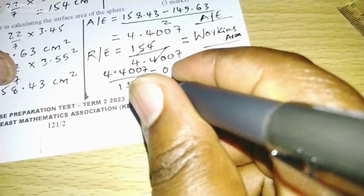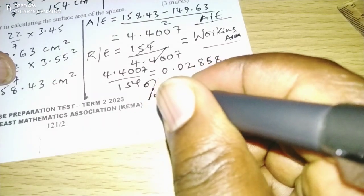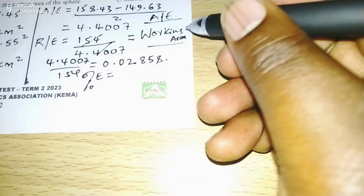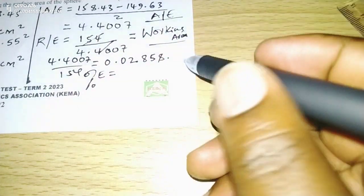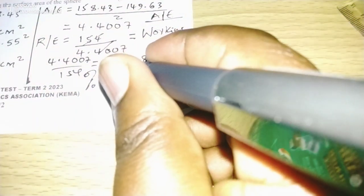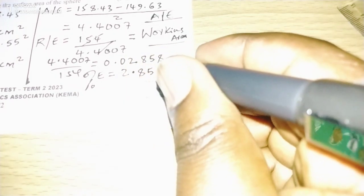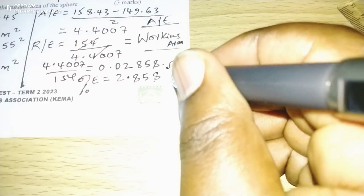Then now, we need what we call percentage error, which is given by relative error times 100. So this figure multiplied by 100 will give us 2.858%.